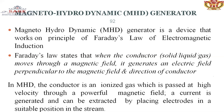In MHD, the conductor is an ionized gas which passes at high velocity through a powerful magnetic field. A current is generated and can be extracted by placing electrodes in a suitable position in the stream. The ionized gas passes through the magnetic field at high velocity and the current is collected via electrodes placed in the stream.